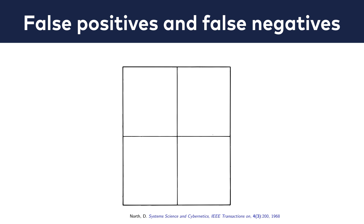The concept of false positives and false negatives is commonly used in another part of data science — in predictive analytics, where you try to predict the future. And if you think about it, when evaluating an A/B test result, you do a prediction as well. You try to predict the probability that the result of your test will repeat itself in the future.